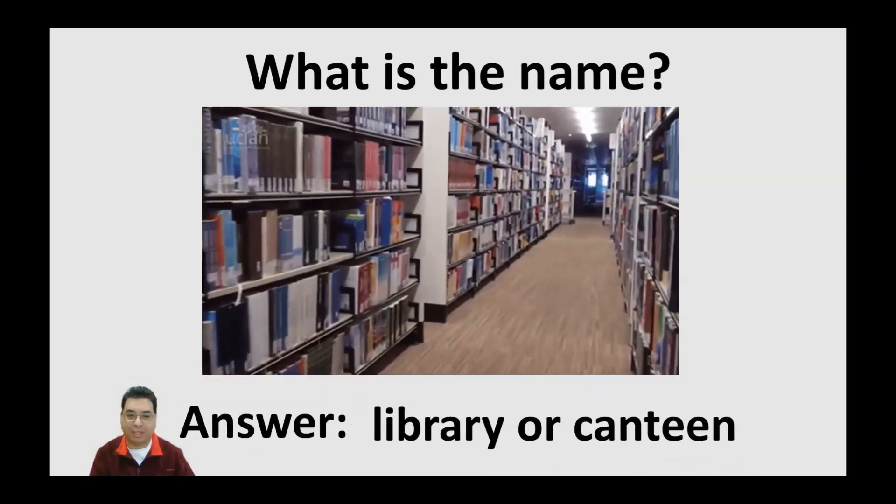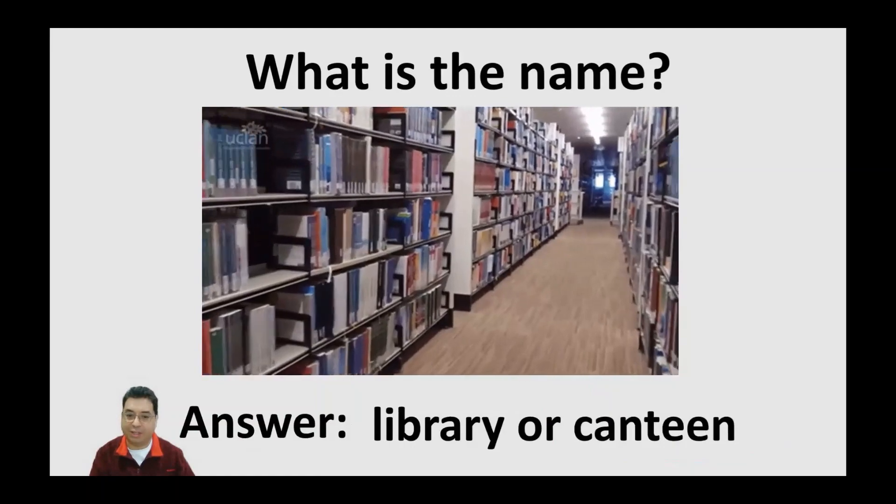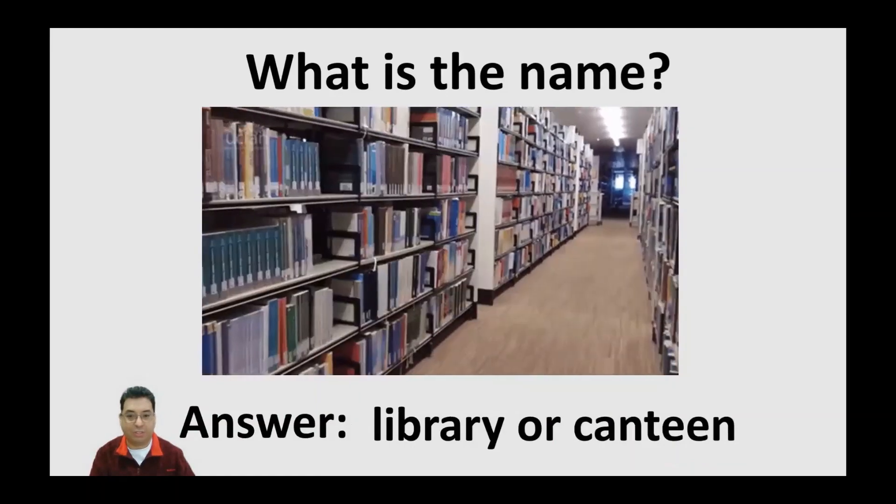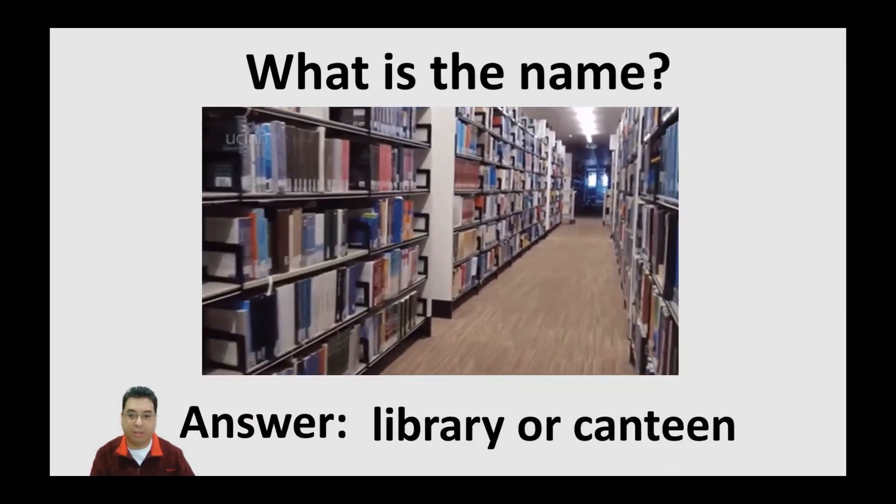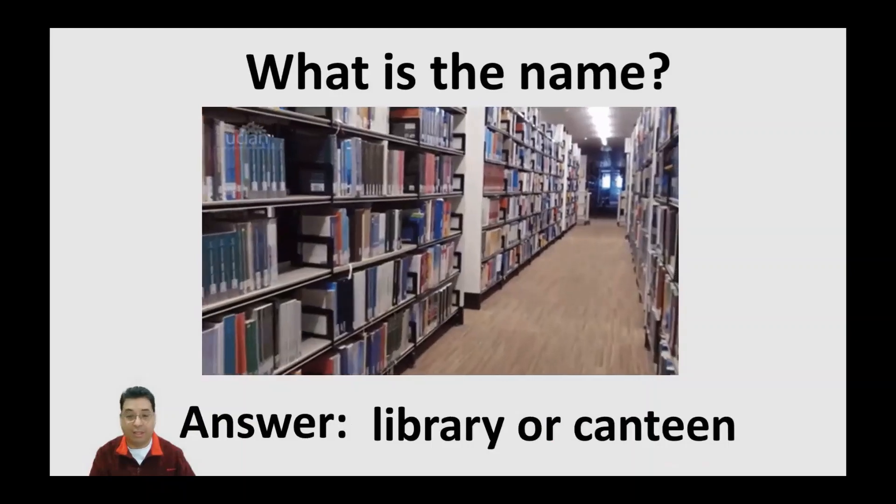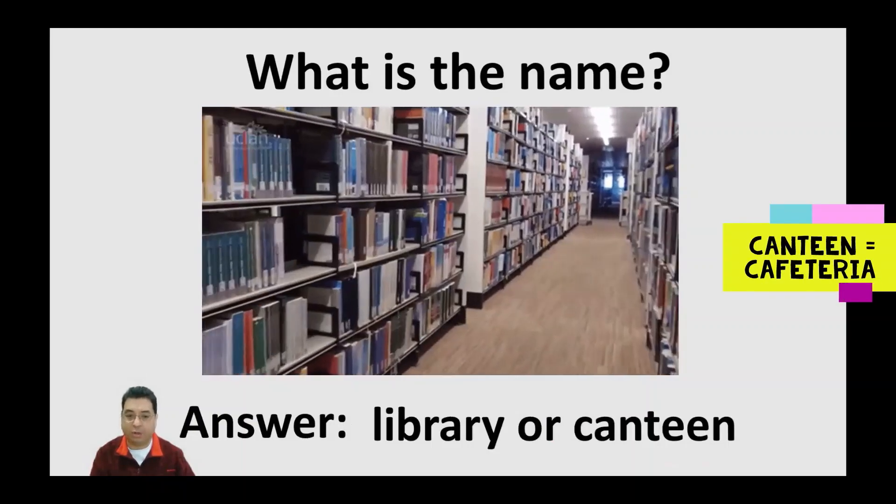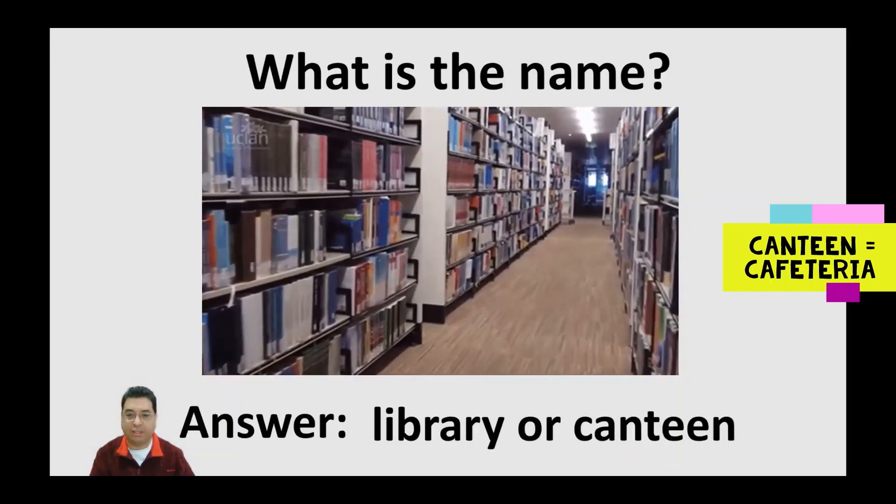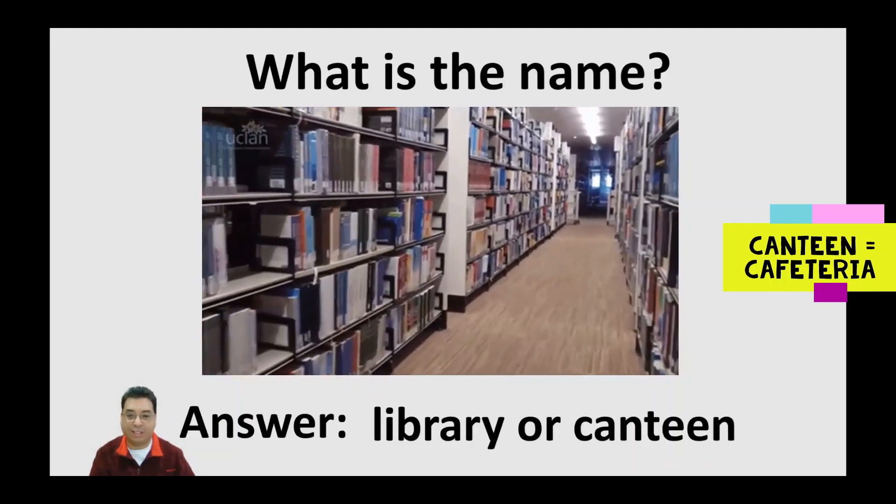What about this place? What's the name of this one here? Again, you have two choices. Is it a library or a canteen? Now, if you're like, what's a canteen? That's actually another word for cafeteria. That's right. It's a library.